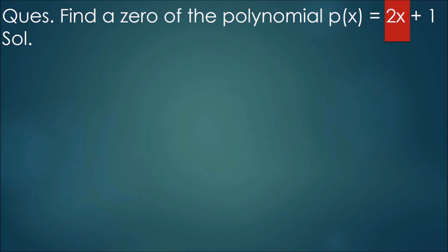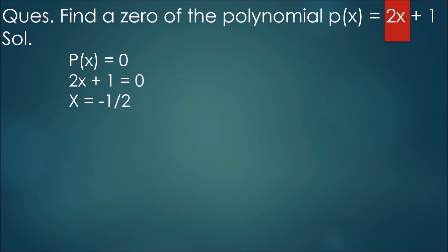Let us discuss one question: find a zero of the polynomial p(x) = 2x plus 1. Finding a zero of p(x) is the same as solving the equation p(x) = 0. Equating 2x plus 1 to 0 gives x = minus 1 upon 2. So minus 1/2 is a zero of the polynomial 2x plus 1. We observe here that a zero of a polynomial need not be 0 itself — 0 may be a zero of a polynomial, but every linear polynomial has one and only one zero. A polynomial can have more than one zero.